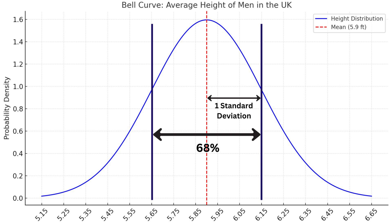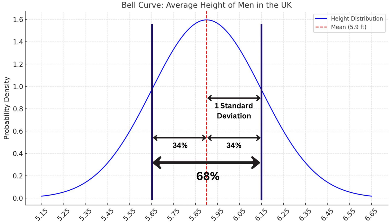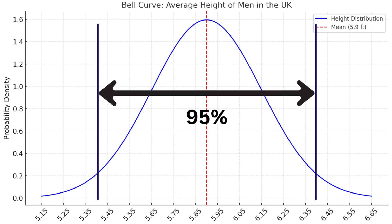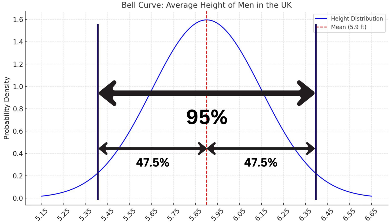Because this is a curve, half of that 68 percent — so 34 percent — will fall between the average height of 5.9 feet and 6.15 feet, and the other 34 percent are between 5.65 feet and 5.9 feet. If we go two standard deviations away from the average, we have a range of 5.4 feet to 6.4 feet. Two standard deviations from the mean now includes 95 percent of all men in the UK — 47.5 percent above the average and 47.5 percent below.